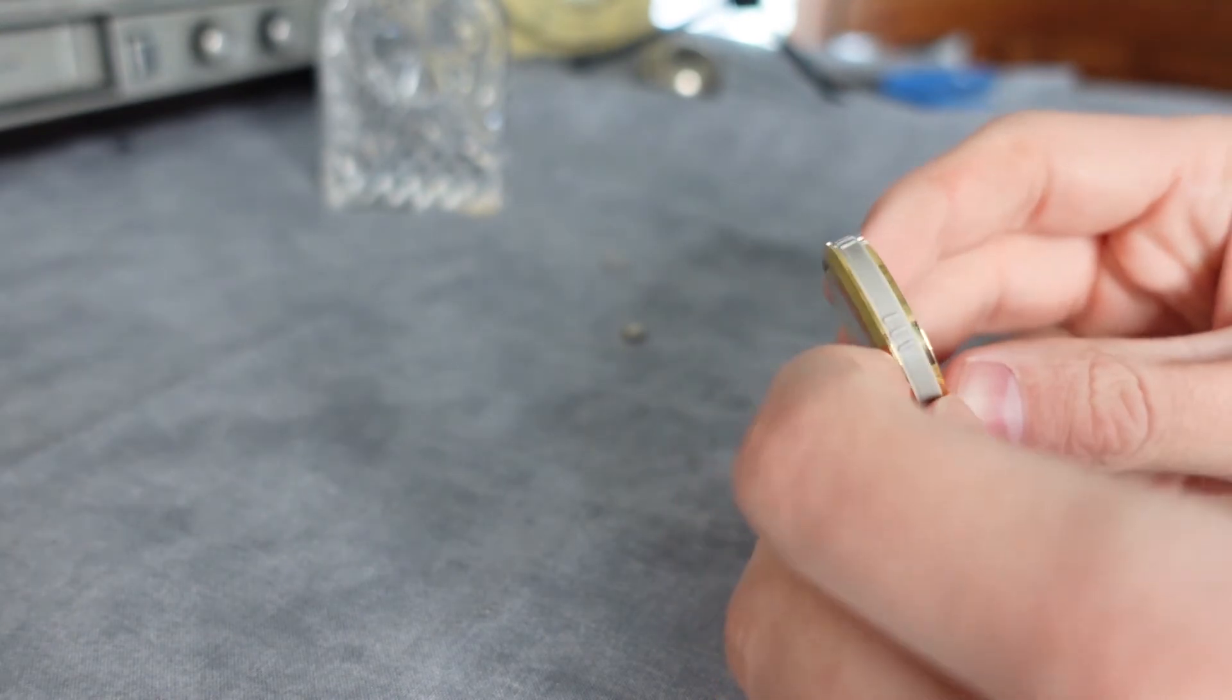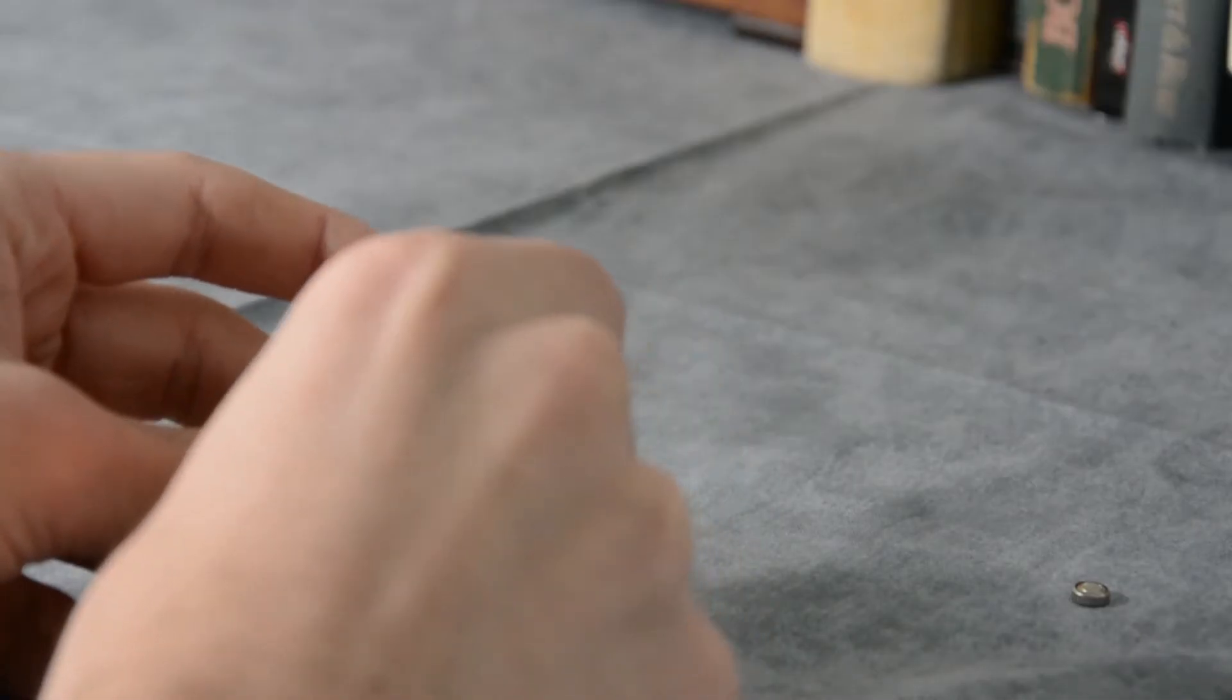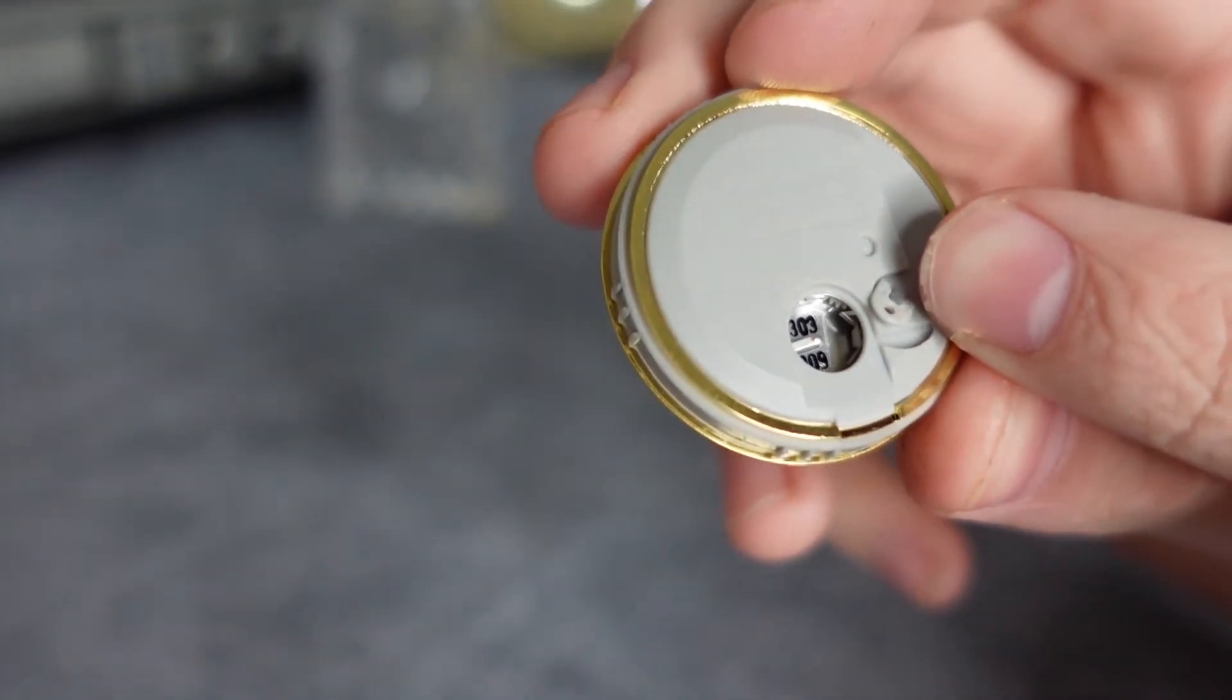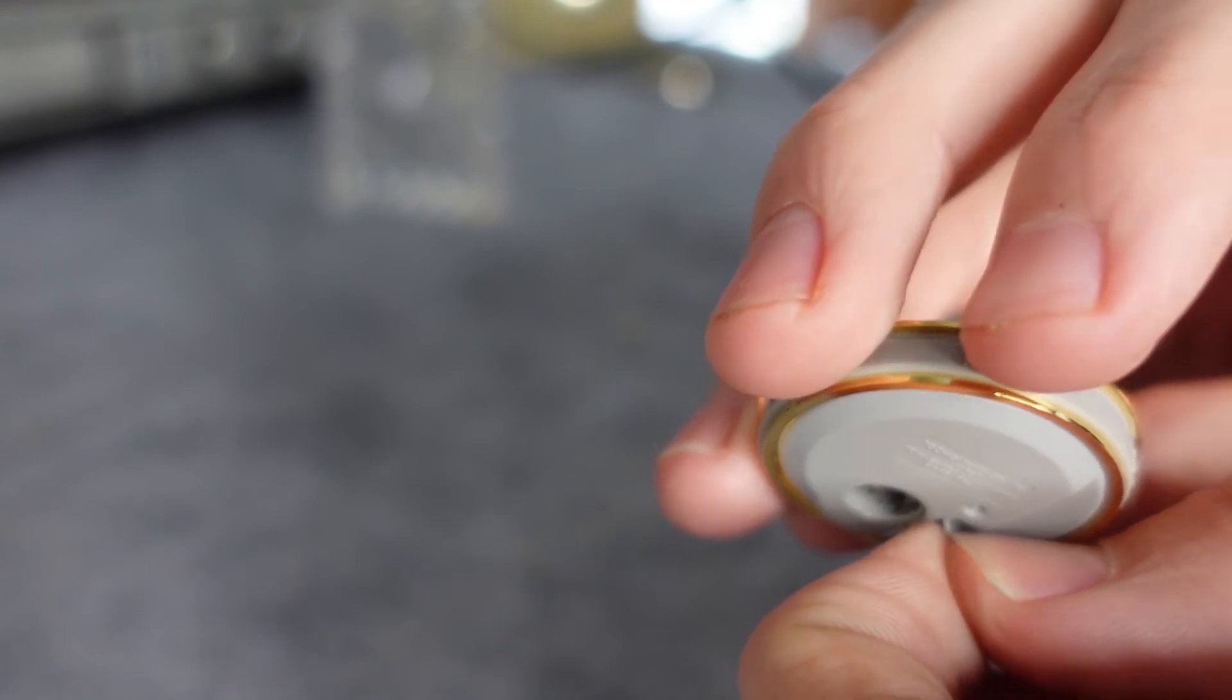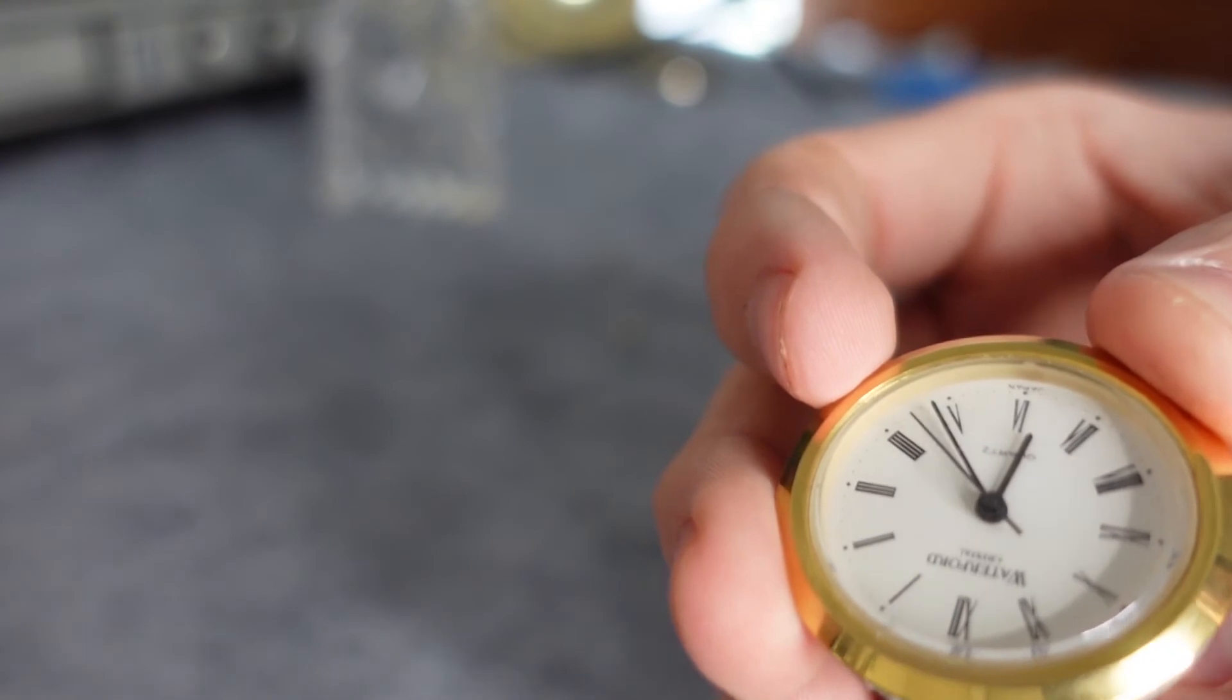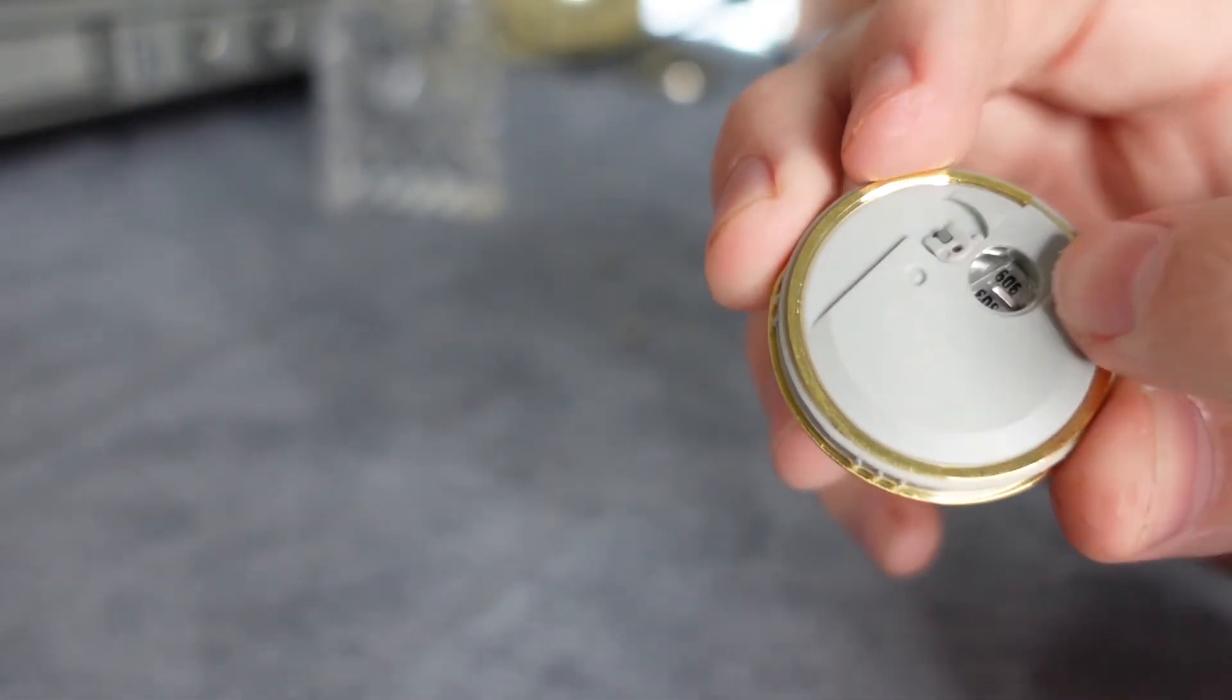To change the time, what you would do is see this knob here - you flip it up. It's kind of hard to see, but this knob right here you can actually flip it up like this, then twist that knob and it will change the time. So this here changes the time like I just said.